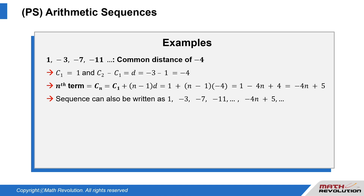1, −3, −7, −11, and so on. This arithmetic sequence has a common distance of negative 4, since c(1) equals 1, and c(2) minus c(1) equals d equals −3 minus 1 equals −4. The nth term equals c(n) equals c(1) plus (n−1) times d equals 1 plus (n−1) times (−4) equals 1 minus 4n plus 4 equals −4n plus 5. So the sequence can also be written as 1,